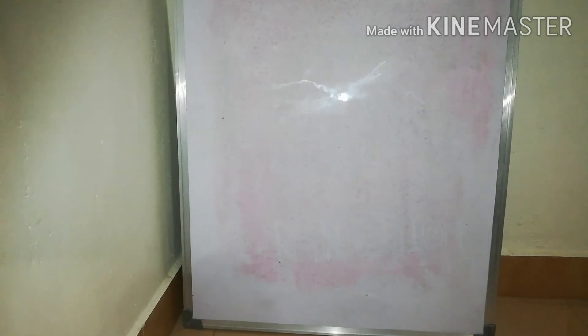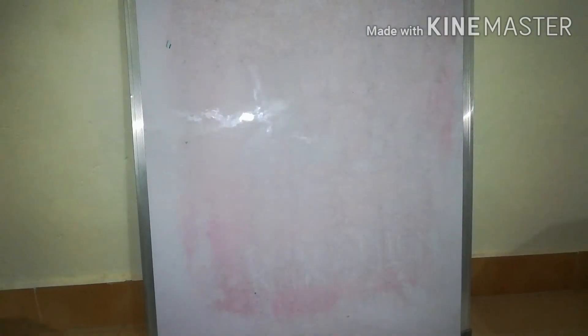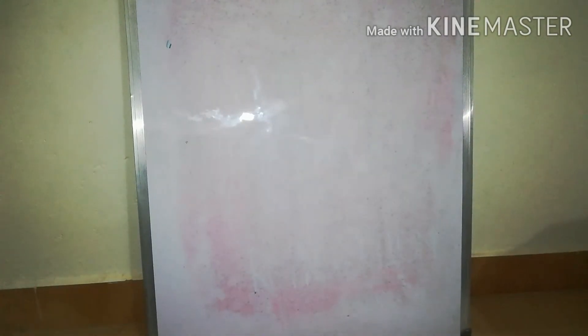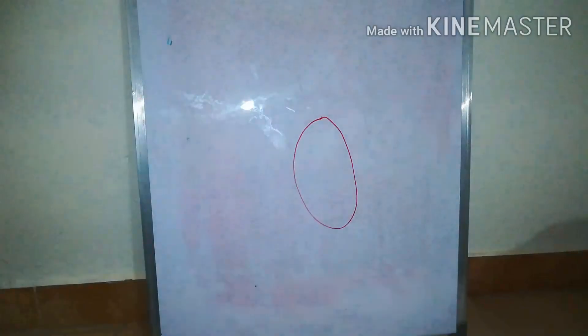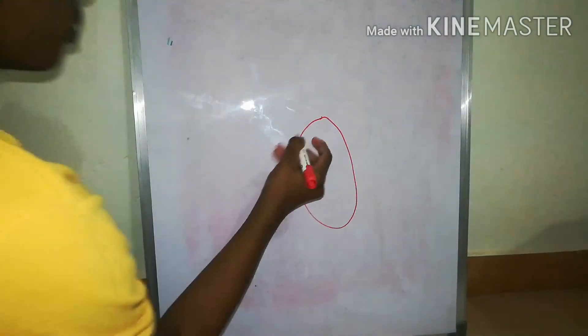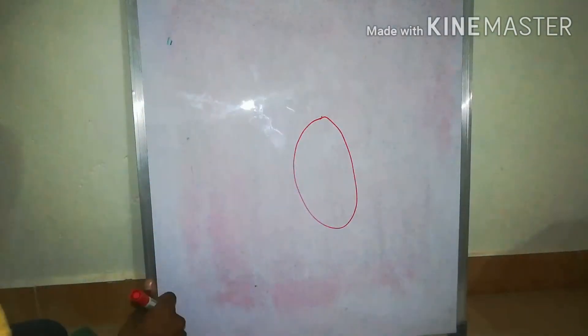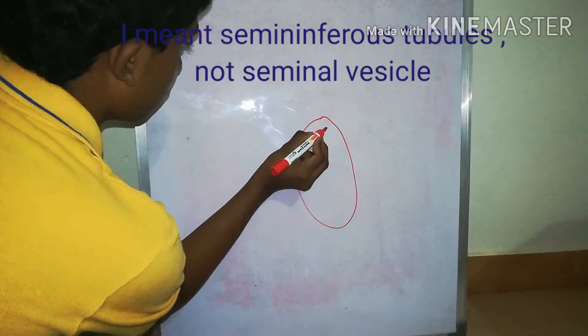It's time for some diagrams. Let's draw the diagram of the testis. Now that we have studied all the structures of the testis, we should be able to draw this structure very easily. We are going to start by drawing the testis — its shape is oval. Inside this testis, we have seminiferous tubules.